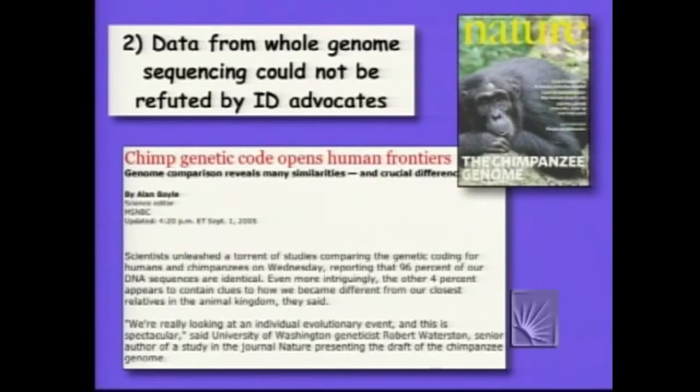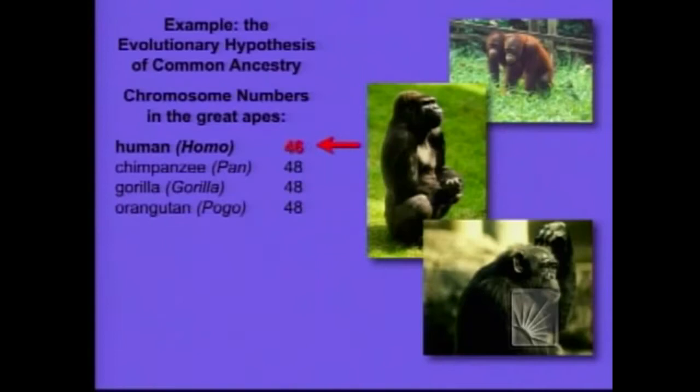Here's an example. A few months ago the genetic code of the chimpanzee was published, allowing us to compare our genome to these primate relatives. One striking finding is that evolution argues we share a common ancestor with the great apes — chimpanzee, gorilla, and orangutan. Well, if that's true there should be genetic similarities, and in fact there are. But there's something interesting that has the potential, if it were true, to contradict evolutionary common ancestry: we have two fewer chromosomes than the other great apes. We have 46; they all have 48.